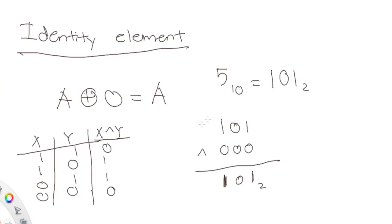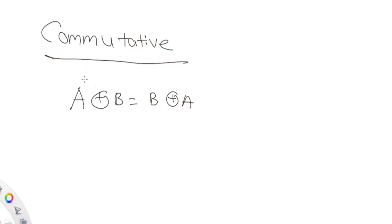A cool thing about XOR: if you XOR a bunch of numbers and there's a duplicate number, XORing it with itself gives zero. Then XORing zero with any remaining number just gives you that number back. So you can use XOR to find the only value that's not a duplicate.